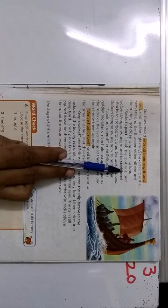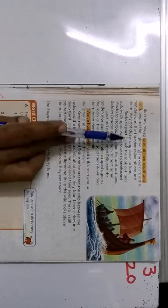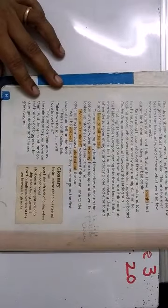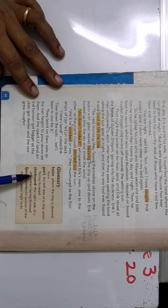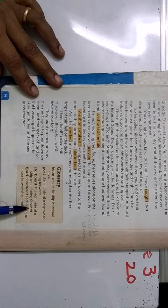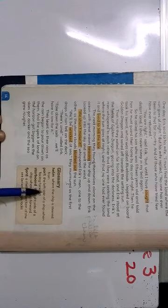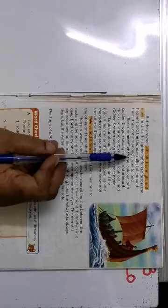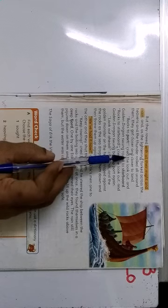Rocks to port cried the lookout. And golden dragons swung around to starboard. Now children see this word port and starboard. It is in bold. Can you see? It's in dark black. Now if you see a glossary here on page 14, you can see the meaning of port. Port is the left side of a ship when facing forward. And starboard is the right side of a ship when facing forward. Port is also children where ships are there, but here in this lesson it says the port is the left side, and starboard is the right side part of the ship. So basically, children, it is telling us that how the ship is moving, left and right, and how it is difficult to sail through this rough weather.